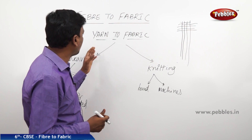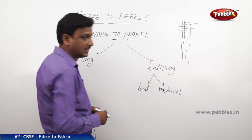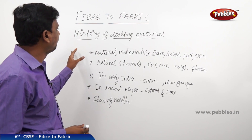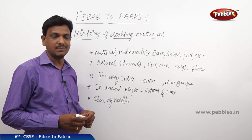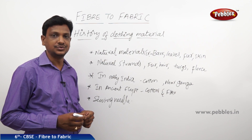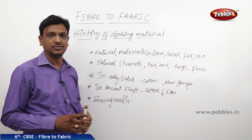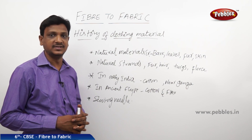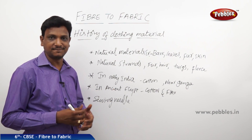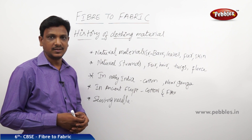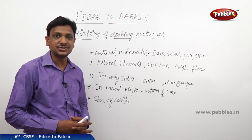So that is yarn to fabric — two processes: weaving and knitting. Now let us see the history of clothing material. If you see pictures of ancient cave men, they were not wearing the clothes we wear today. Today we have many different kinds of clothes with different colors, shapes, and designs. But ancient men used to drape some material around their body just to cover and protect it.